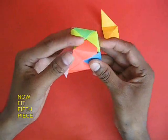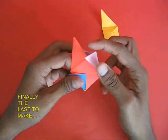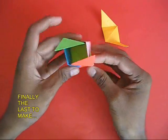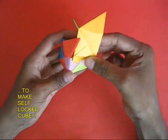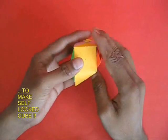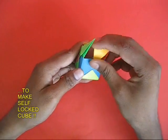The pockets go into the cubes. Finally, you take the last unit, the sixth one and you put both its flaps and tuck them in the pockets.